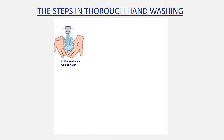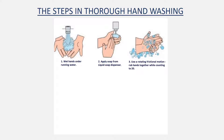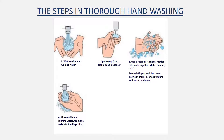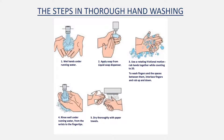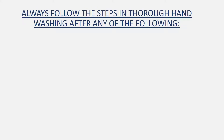Proper hand-washing technique must be practiced by all. The steps are: wet hands under running water, apply soap from a liquid soap dispenser, use a rotating friction motion and rub hands together counting to twenty, wash fingers and the spaces between them by interlacing fingers and rubbing up and down, rinse well under running water from the wrists to the fingertips, dry thoroughly with paper towels, and turn off the water with a paper towel.